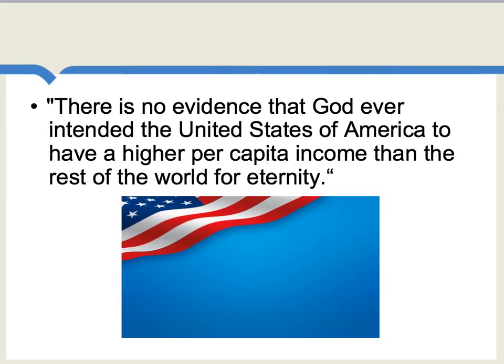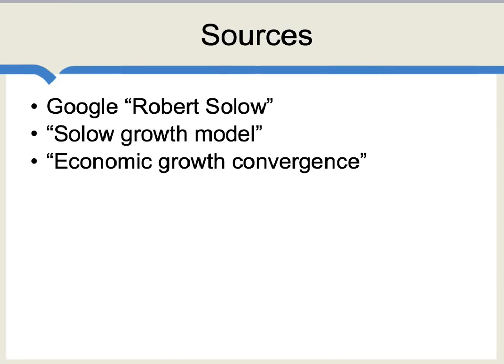Robert Solow is a very witty man, and he's known as such. He has a lot of famous sayings, and one of them shows that he really does believe in a good deal of convergence. Solow once said, and I quote: "There is no evidence that God ever intended the United States of America to have a higher per capita income than the rest of the world for eternity." The Solow model is a very important place to start for understanding the nature and sources of economic growth. It's an incomplete model, but still a basic model that is really foundational for the thinking of economists on growth. I definitely recommend you give Alex's more complex videos a try — but you can also just Google Robert Solow, Solow growth model, and economic growth convergence.